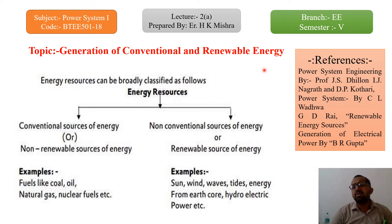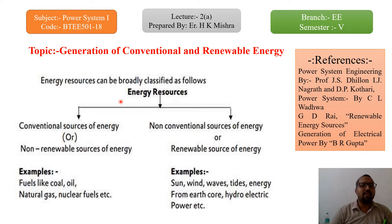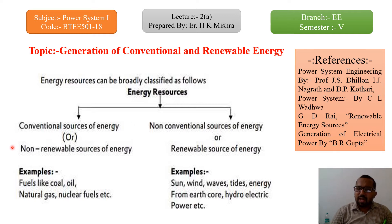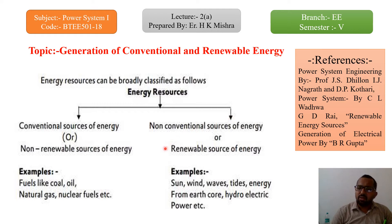Conventional means, you can also say, non-renewable energy sources, and renewable means you can also say non-conventional energy sources. So first we discuss and broadly classify the energy sources. Energy sources are classified generally into two parts: first one is conventional sources of energy, also known as non-renewable sources of energy, and second one is non-conventional sources of energy, also known as renewable energy sources.